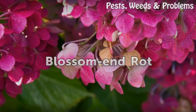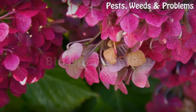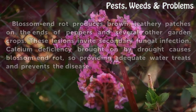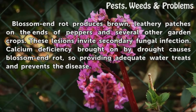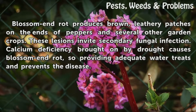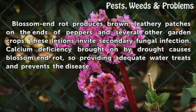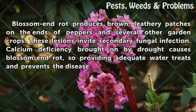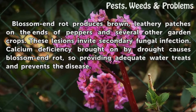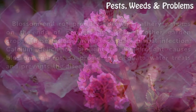Blossom end rot produces brown leathery patches on the ends of peppers and several other garden crops. These lesions invite secondary fungal infection. Calcium deficiency brought on by drought causes blossom end rot, so providing adequate water treats and prevents the disease.